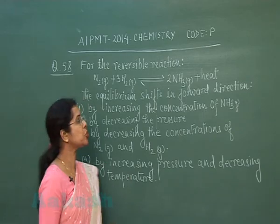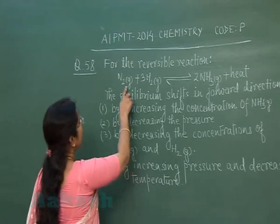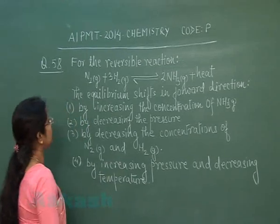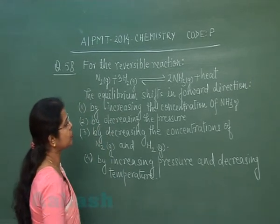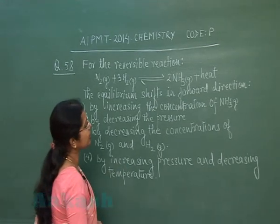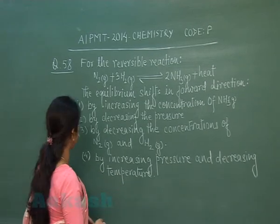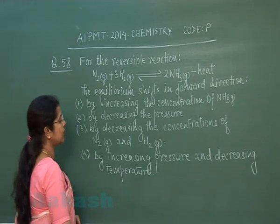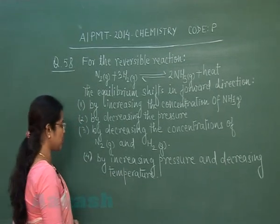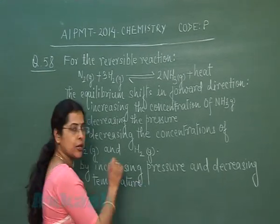Our next question is question number 58. For the reversible reaction N₂ + 3H₂ → 2NH₃ + heat, the equilibrium shifts in the forward direction. The first option is by increasing the concentration of ammonia. Second option: by decreasing the pressure. Third option: by decreasing the concentration of nitrogen and hydrogen. Fourth option: by increasing pressure and decreasing temperature.